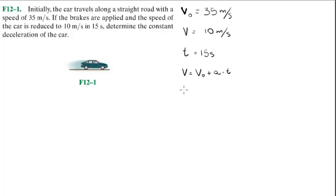Now, all we got to do is plug in the values. V is 10, V0 is 35, A is what we're looking for, and T is 15.